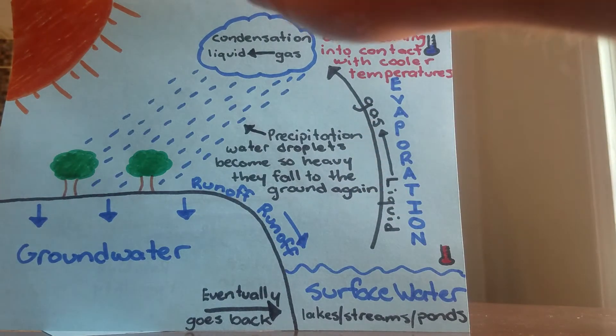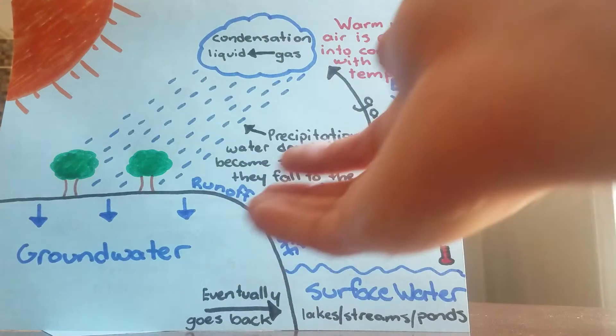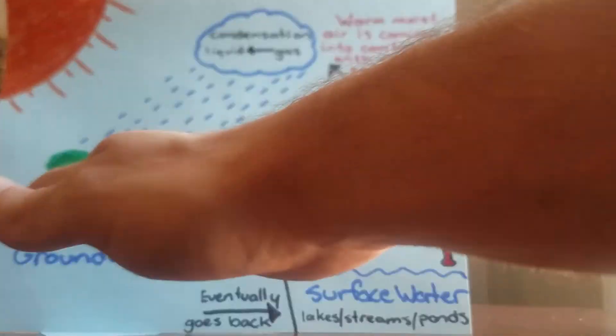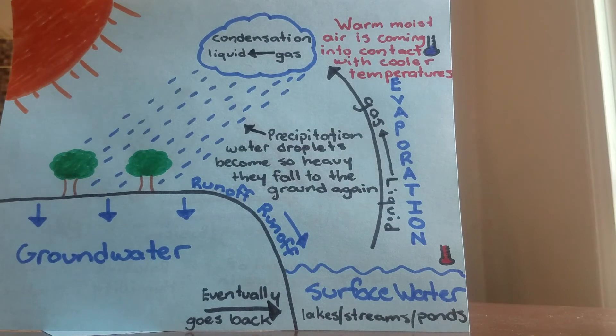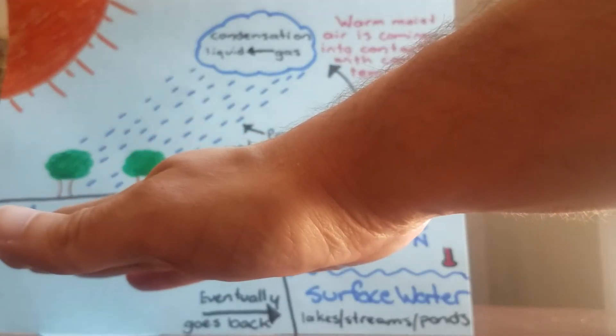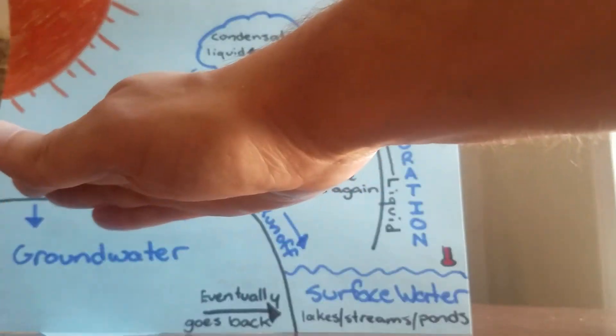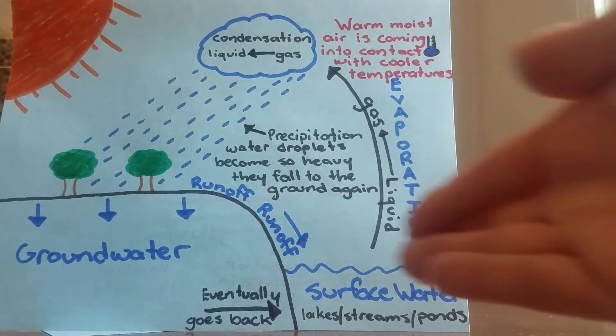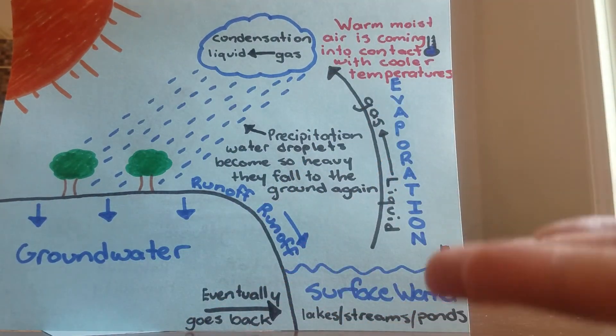So this is why we call it the water cycle—it's very cyclical. Once again, water falls down to the earth in the form of precipitation: rain, snow, sleet, hail, whatever falls down to the ground. It soaks up the ground like that sponge. When that ground gets saturated or nearly saturated, it's going to increase the degree of runoff.